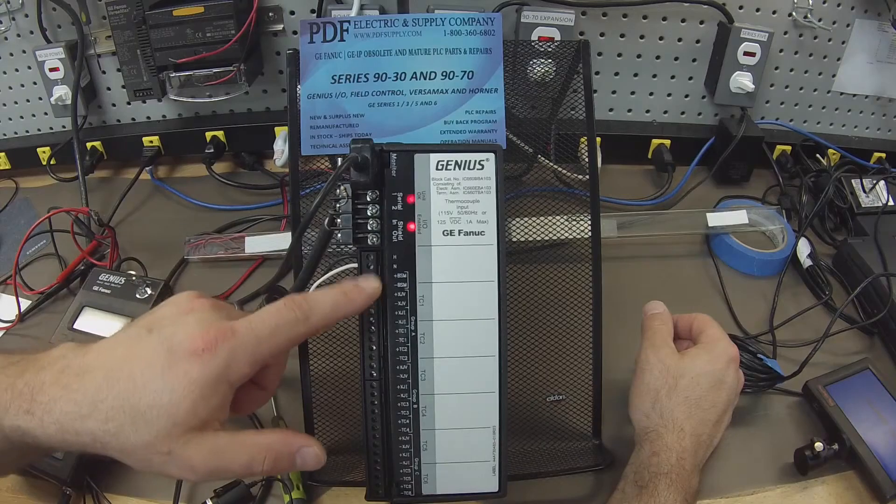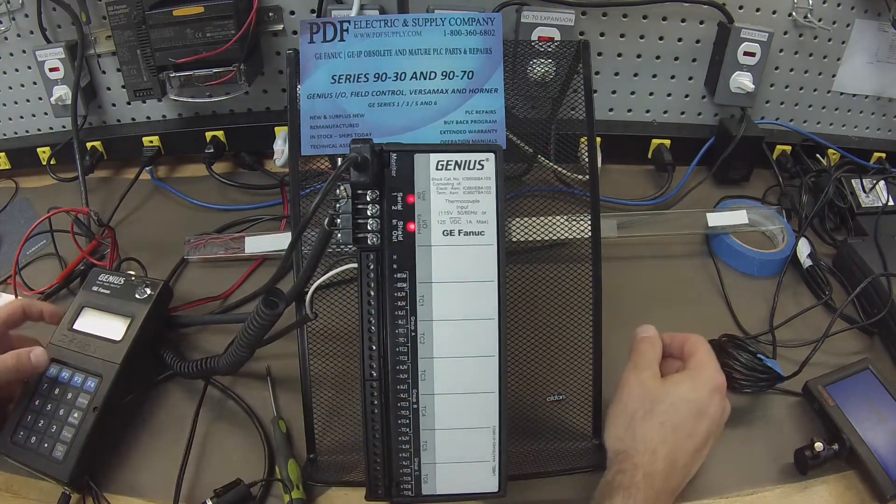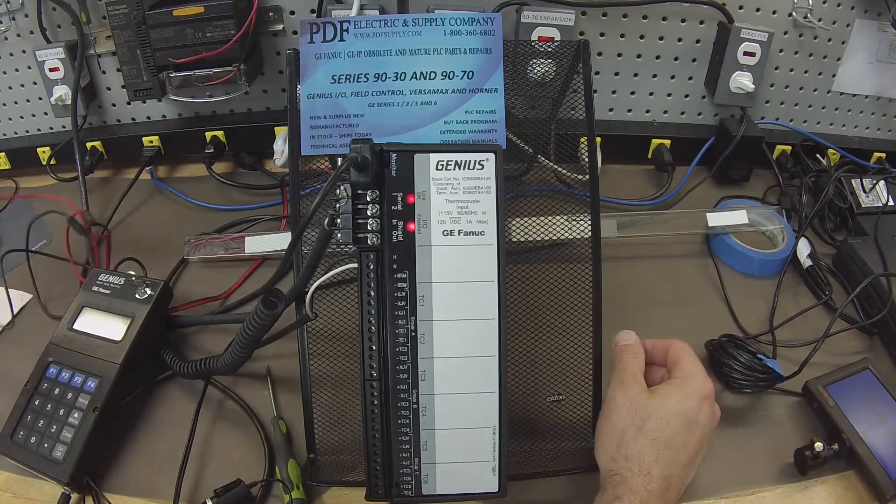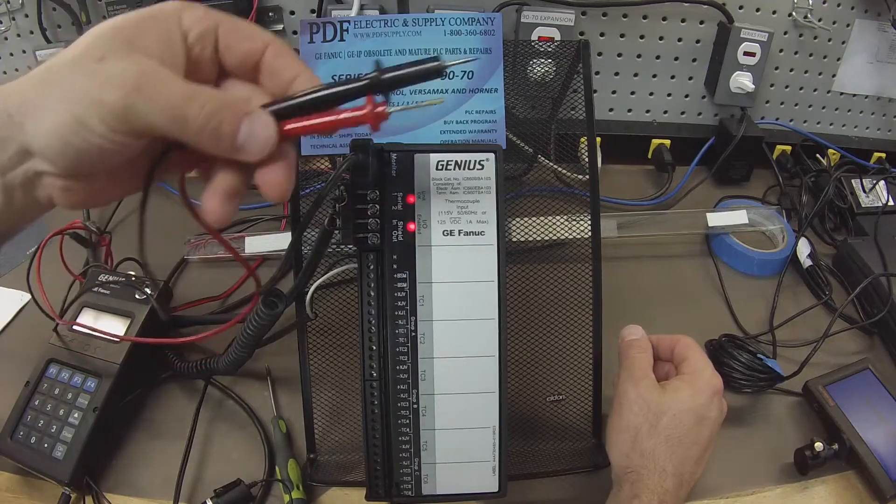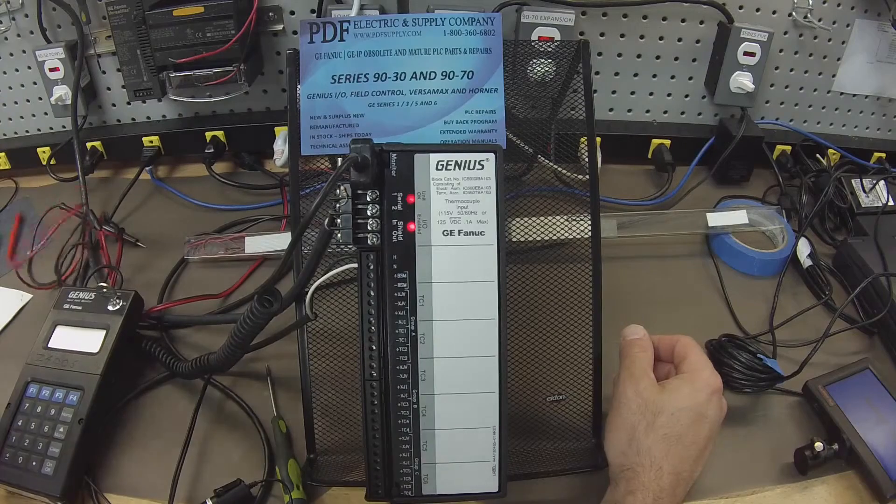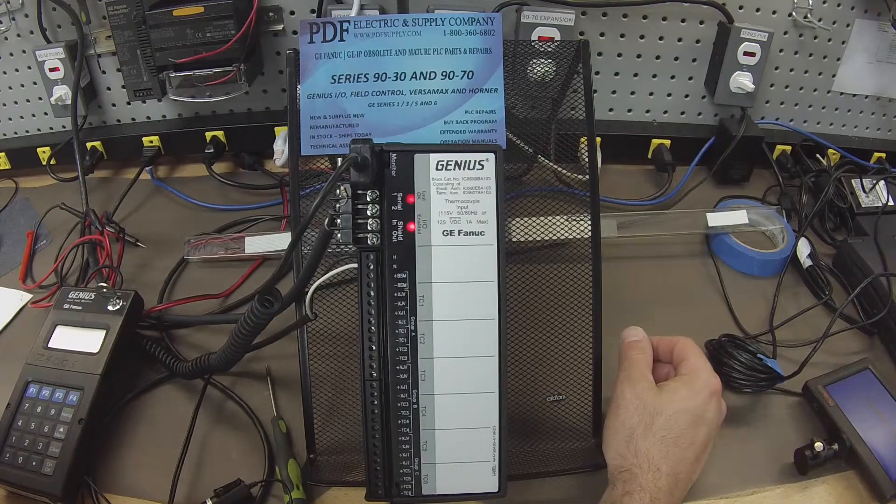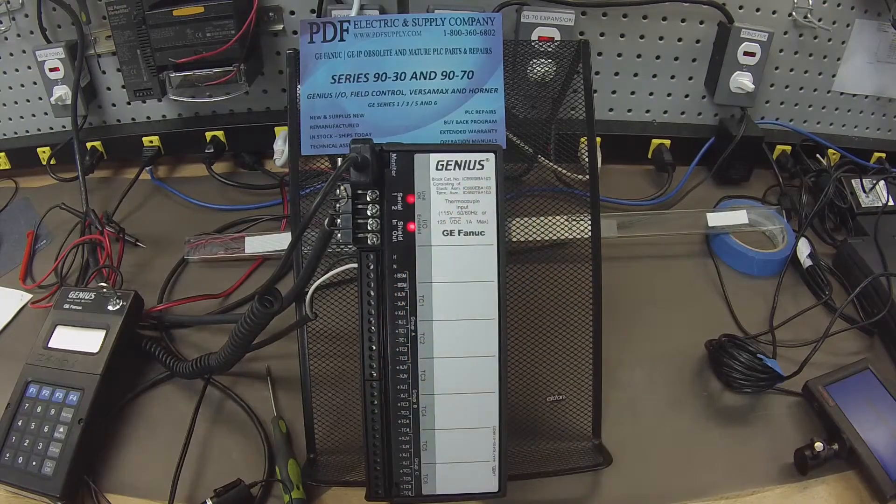So the next things we want to check, of course, are the inputs, thermocouple 1 through 6. Now, I have as a test fixture a thermocouple with positive and negative leads for the two different types of metals. It's a J-couple and it creates a millivolt-type signal which can be read by the IC-660BBA-103.